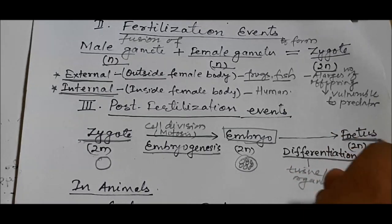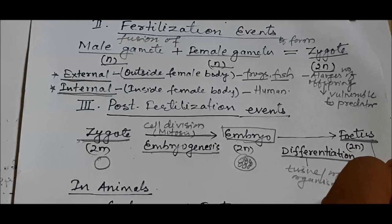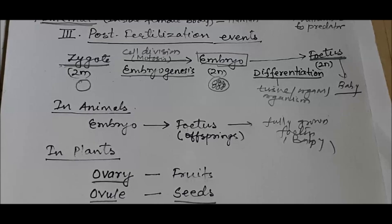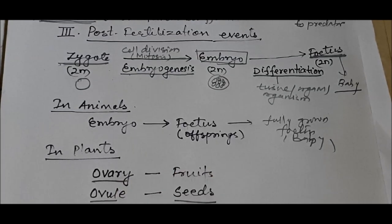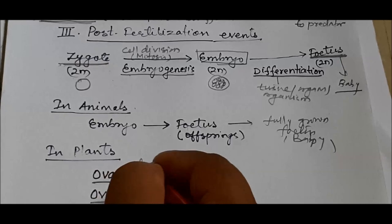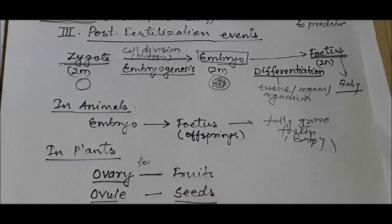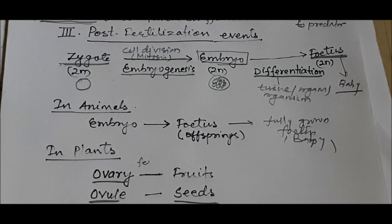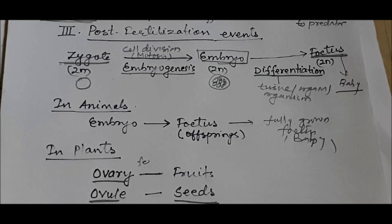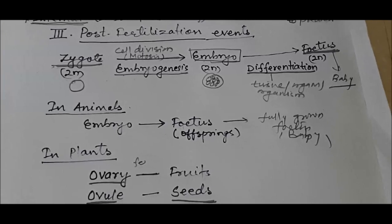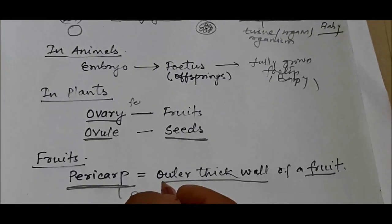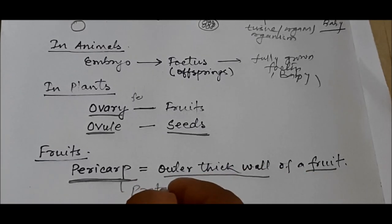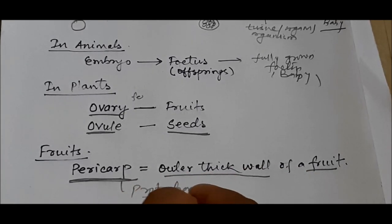The fully developed body is called a fetus, which grows into a baby. In plants, similarly, after fertilization the ovule develops into seeds and the ovary develops into fruits. The outer thicker wall of the fruit is called the pericarp, which helps in the protection of the fruit.